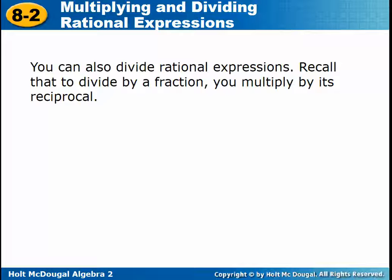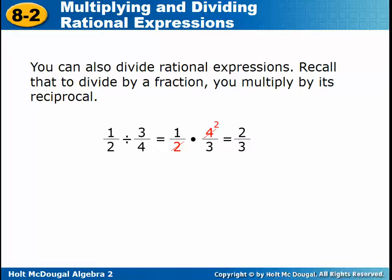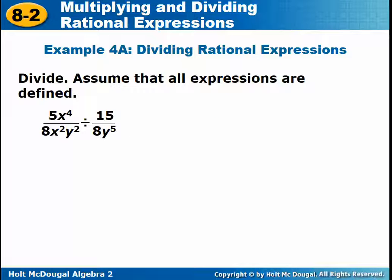When we divide by a fraction, you multiply by its reciprocal. So if you want to take 1/2 divided by 3/4, you really are going to do 1/2 times 4/3. Then you can cancel anything that's common — common factors — and then you write your simplified answer. We don't have to worry about what Y or X cannot be, because it says assume that all expressions are defined.